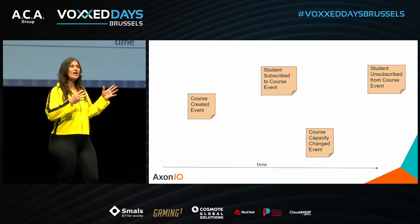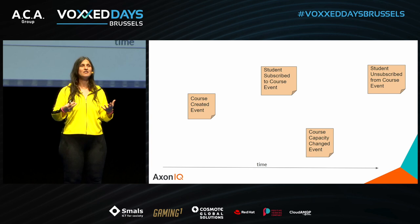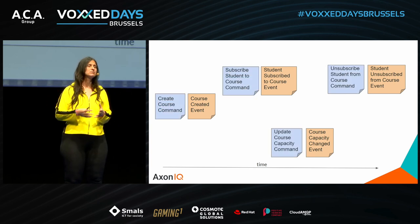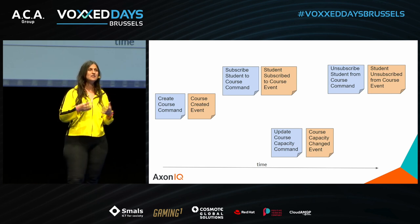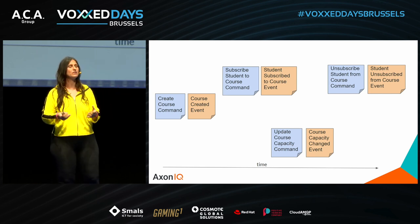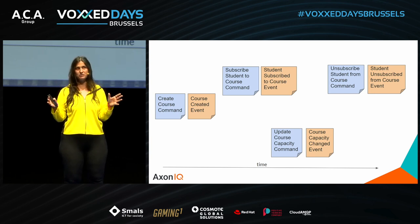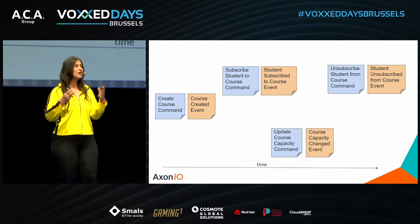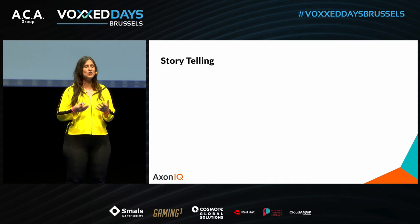In that case, the course will not be able to accept any further subscriptions until a sufficient number of unsubscriptions has taken place to allow the subscribed students count to fall below the capacity again. Let's start modeling this exercise. We know that a course can be created, a student can subscribe or unsubscribe, and the course capacity can change. All these events are triggered by requests from the user through their respective commands — so far, pretty simple.